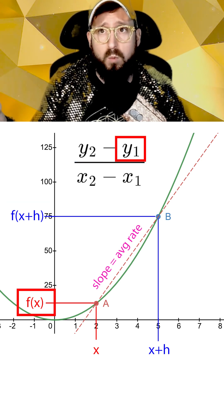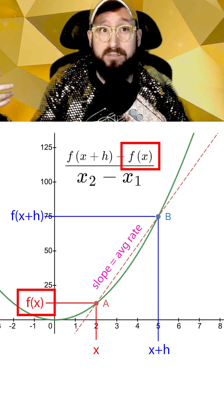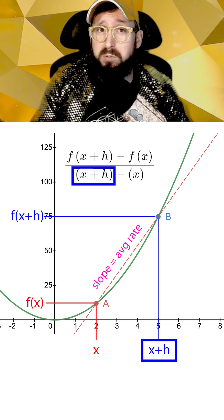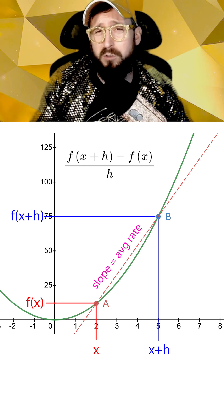this would be y2 minus y1, or f of x plus h minus f of x, divided by x2 minus x1, or x plus h minus x, which just equals h.